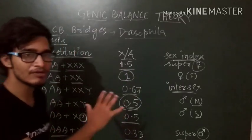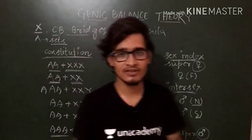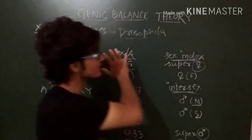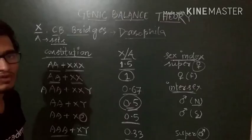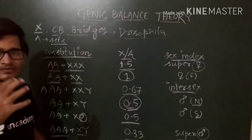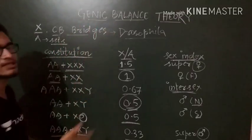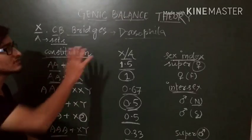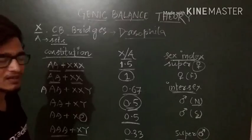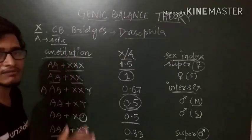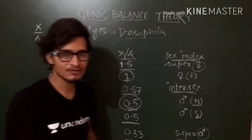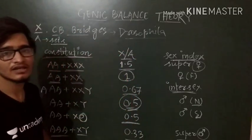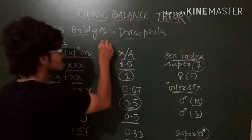So these are the different conclusions which can be derived from CB Bridges' genic balance theory. This is known as genic balance theory. The name of the scientist is very important, that is CB Bridges. He has worked on Drosophila and these are the conclusions that he has derived. Now there is a word: gynandromorphs.